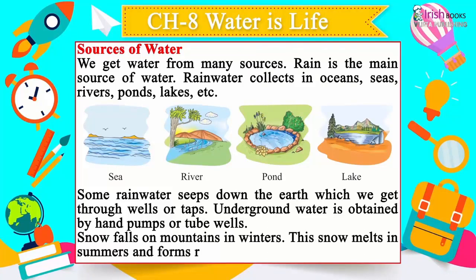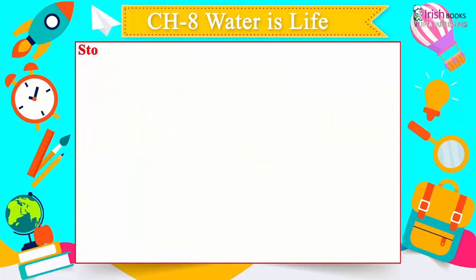Snow falls on mountains in winters. This snow melts in summers and forms rivers. Storing water: Due to poor rainfall, some areas do not get enough water.